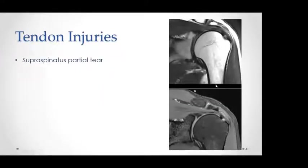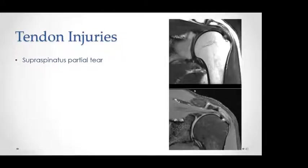Partial thickness tearing shows a focal hyperintense defect at the insertion of the supraspinatus tendon on coronal PDFS, which matches on the coronal T2 — confirming it is a tear rather than magic angle effect. This would be described as a partial thickness articular-sided tear at the insertion of the supraspinatus tendon.